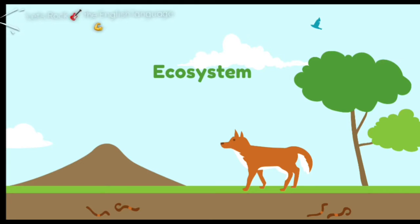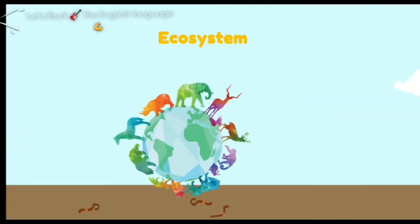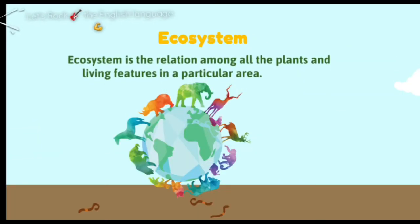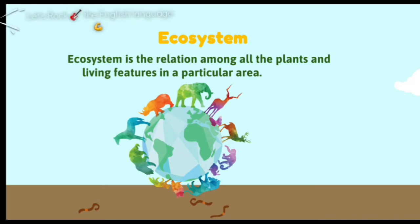Do you know what's meant by ecosystem? Ecosystem is the relationship among all the plants, the living features in a particular area, and also the living and non-living. So any relationship between the living organisms and non-living organisms in the environment, we call it ecosystem.